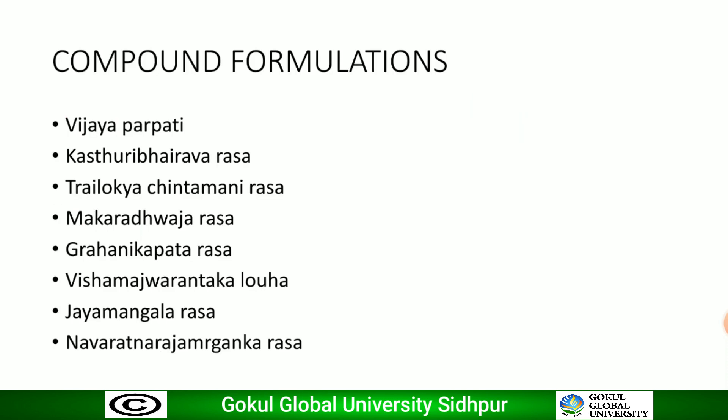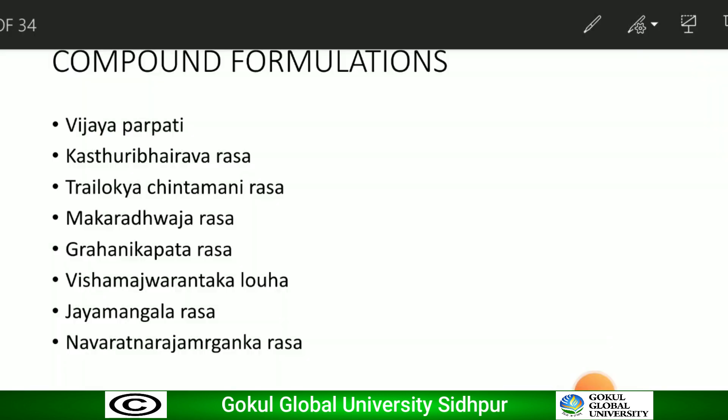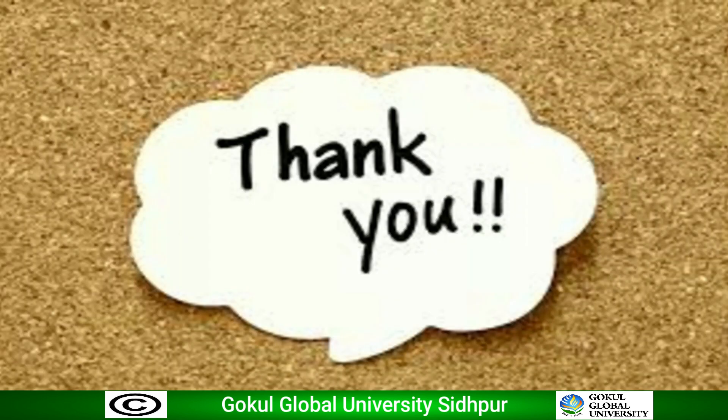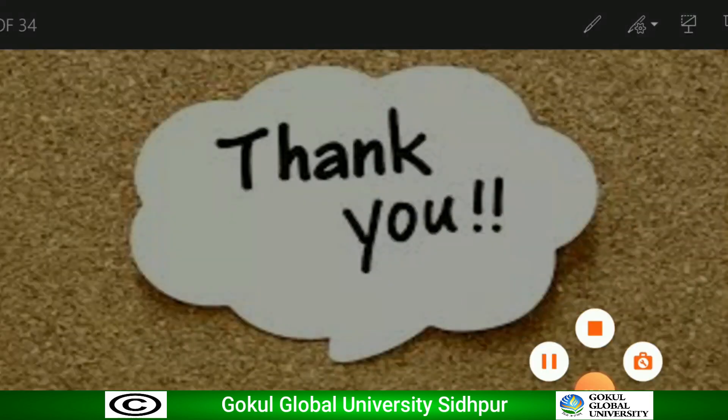Common formulations which include Rajata as an ingredient are Vijaya Parpati, Kasturi Bhairava Rasa, Triloki Chintamani Rasa, Magaradhwaja Rasa, Grahani Kapata Rasa, Vishyamajjurantaka Loha, Jayamangala Rasa, and Navaratna Rajamriganka Rasa. Silver foil is commonly available in markets and is commonly used for the preparation of Rajata Bhasma. We will be dealing with the rest of the Dhatus in the coming classes.